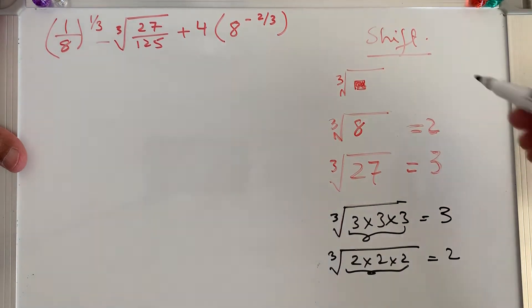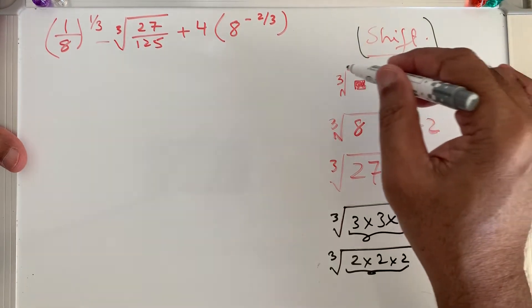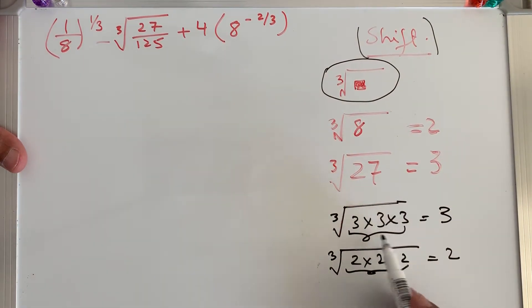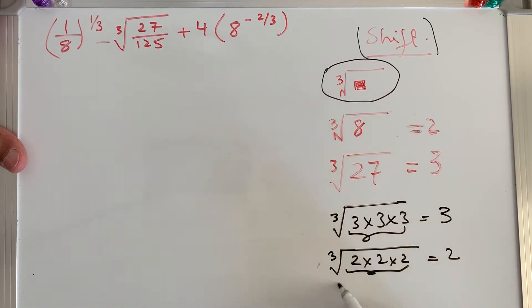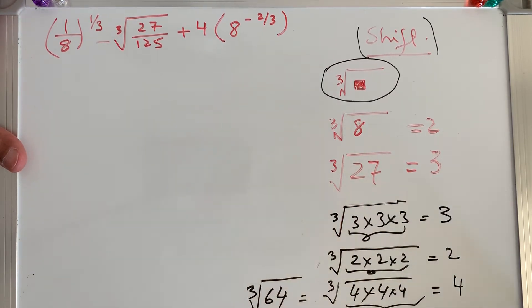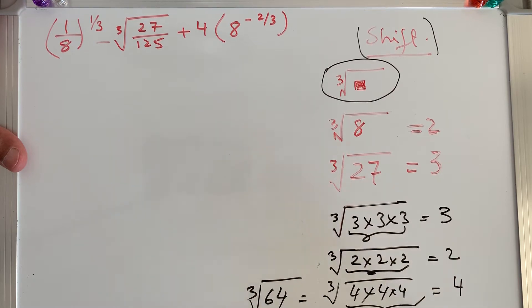We know what cube root means and how to use the calculator button — it's under shift, the red button. Press shift, then the sign, then the number, and it gives you the cube root. For example, 4 × 4 × 4 = 64, so cube root of 64 is 4. And 5 × 5 × 5 = 125, so cube root of 125 is 5.